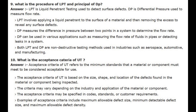Number 10. What is the acceptance criteria of UT? Answer. Acceptance criteria of UT refers to the minimum standards that a material or component must meet to be considered acceptable for use. The criteria is based on the size, shape, and location of defects found in the material or component being inspected, and may vary depending on the industry and application. The acceptance criteria may be specified in codes, standards, or customer requirements. Examples include maximum allowable defect size, minimum detectable defect size, and maximum allowable defect density.